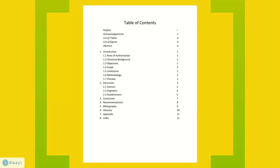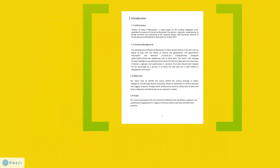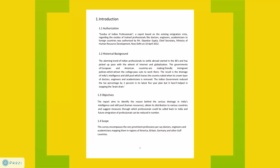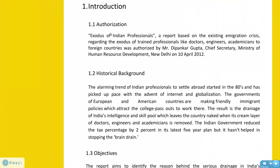This brings us to the first prime element of our discussion: the introduction. The introduction has seven elements. The first element is the note of authorization — it contains the title of the report, the name and designation of the personnel who has authorized you to write the report, and the date of authorization.